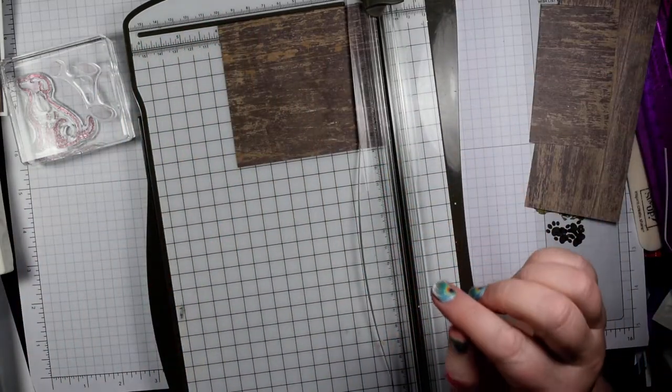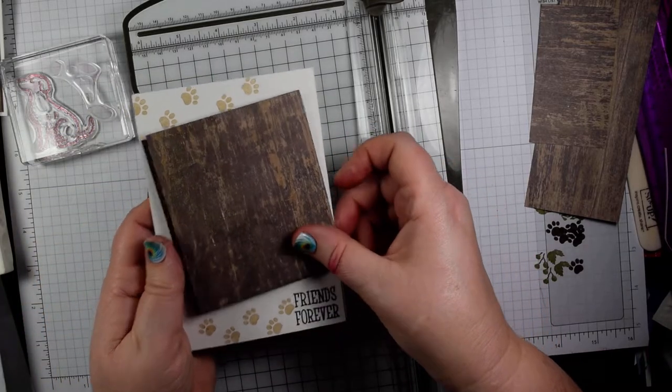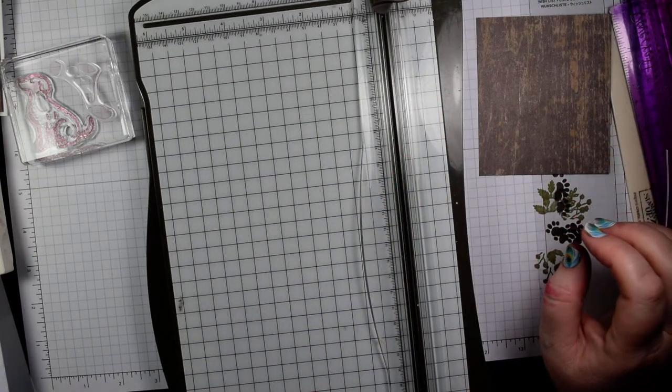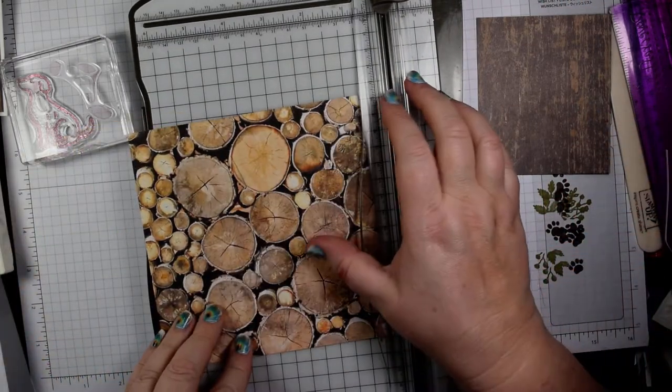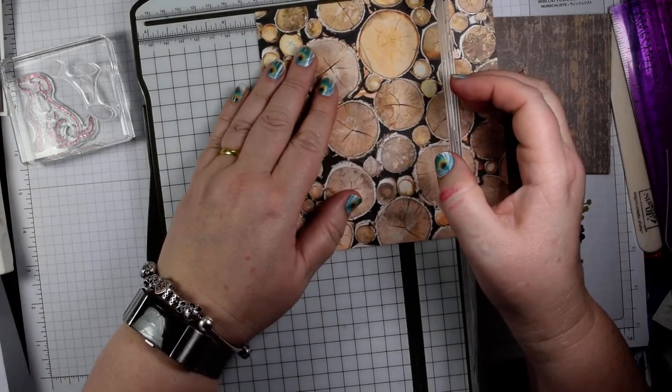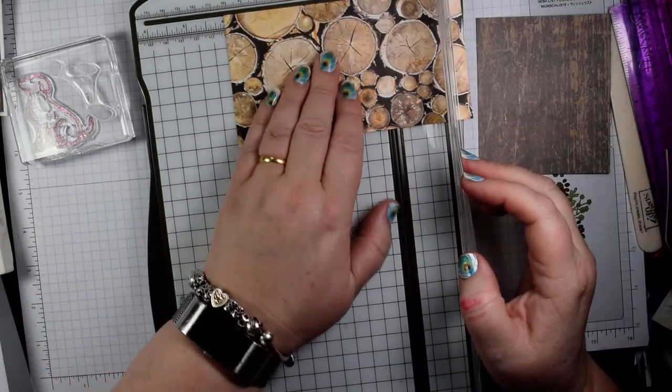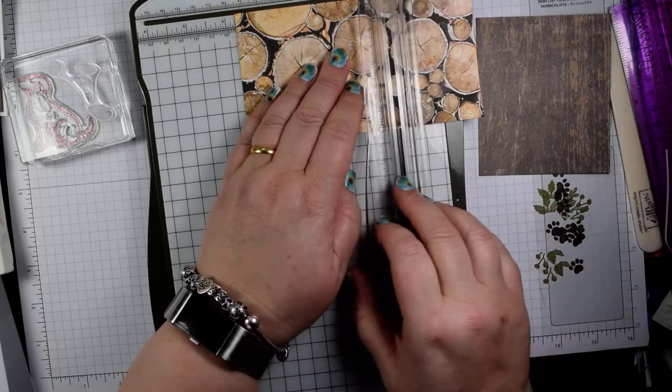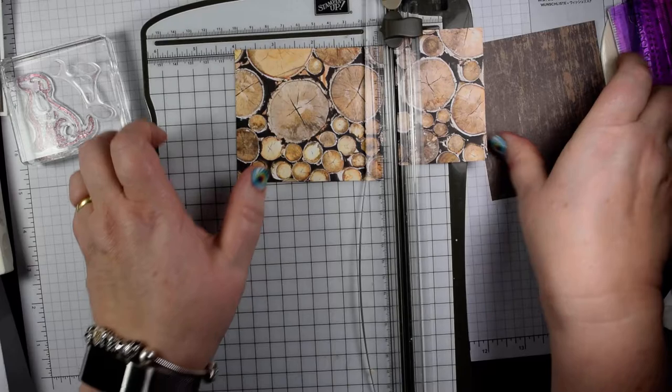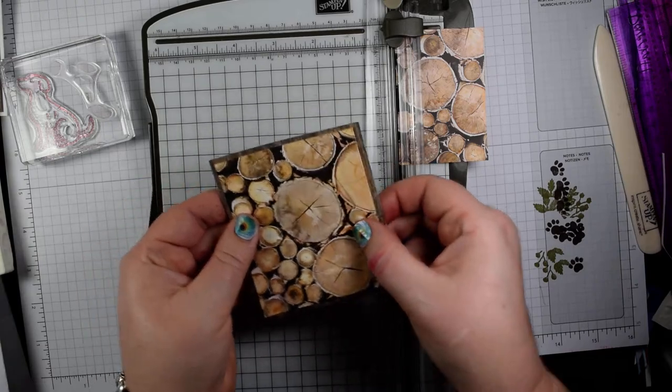I will put all of the measurements in centimeters on my blog as well. This is that layer that's going to go across our card. Then I'm going to cut my lovely bit of wood. This is three and three quarters by three and a quarter. So you'll see that that one is just a quarter of an inch to give us a little layer around the outside.